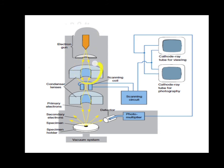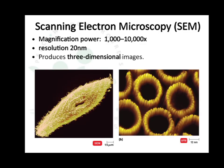The construction of the scanning electron microscope: there is an electron source, and the electron beam is focused by a condenser lens. Between the condenser lenses there is a scanning coil, and the beam is focused onto the specimen in the specimen holder. Primary electrons bombard the specimen and emit secondary electrons. These secondary electrons are detected by a photomultiplier tube connected to a cathode ray tube for viewing, as well as a cathode ray tube for photography.